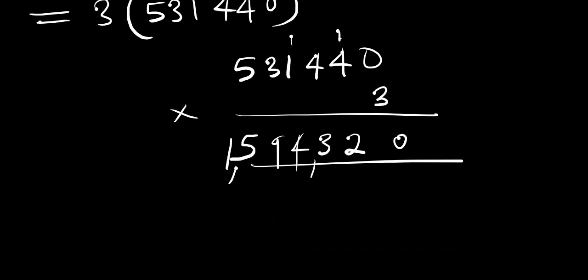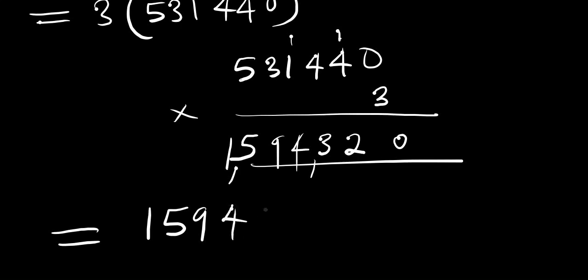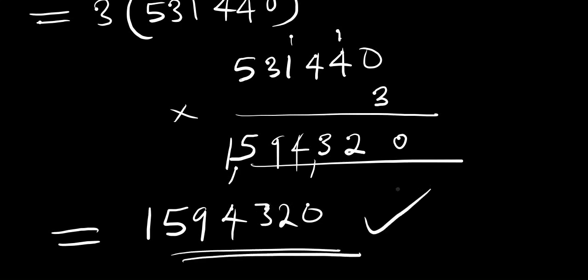So 3^13 minus 3 equals 1,594,320. That is it for the video, thank you and goodbye.